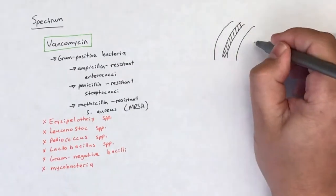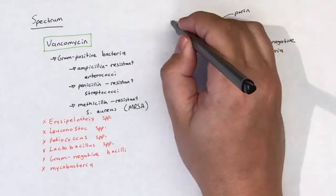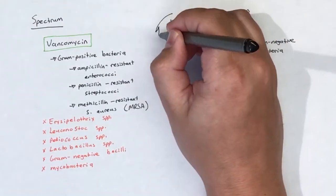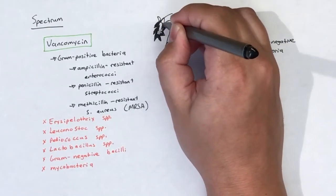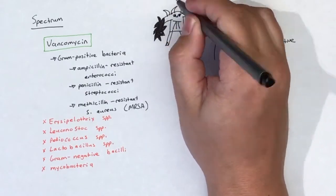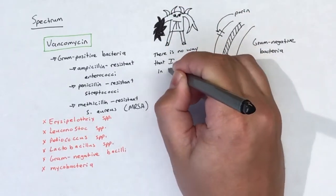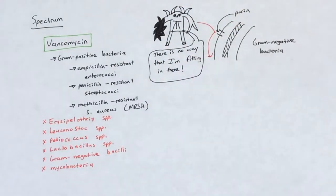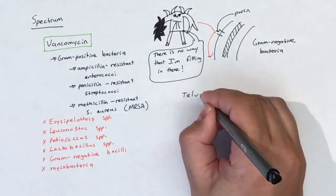The lack of activity of glycopeptides and lipoglycopeptides in gram-negative bacteria comes down to their molecular size. Lipoglycopeptides and glycopeptides are simply too big to penetrate the outer membrane of gram-negative bacteria.